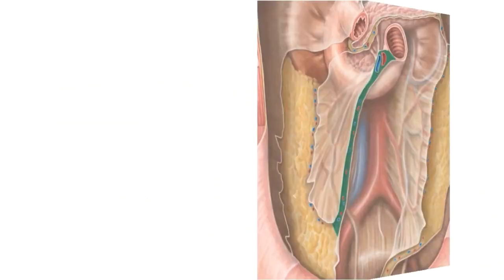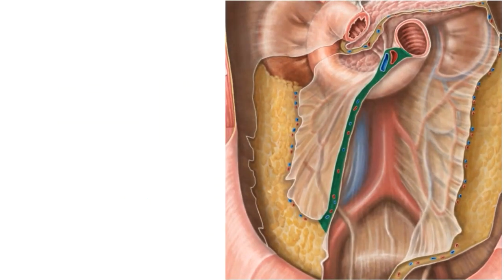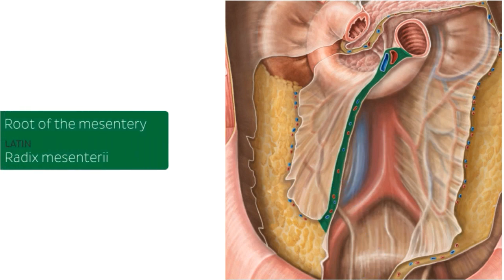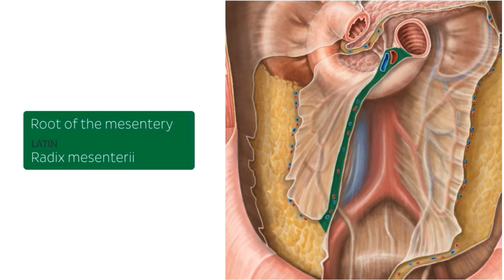The mesentery that attaches to the small intestine, the small bowel mesentery, arises from this structure here, the root of the mesentery. The root of the mesentery runs diagonally from the end of the duodenum and is about 15 cm long in adults.